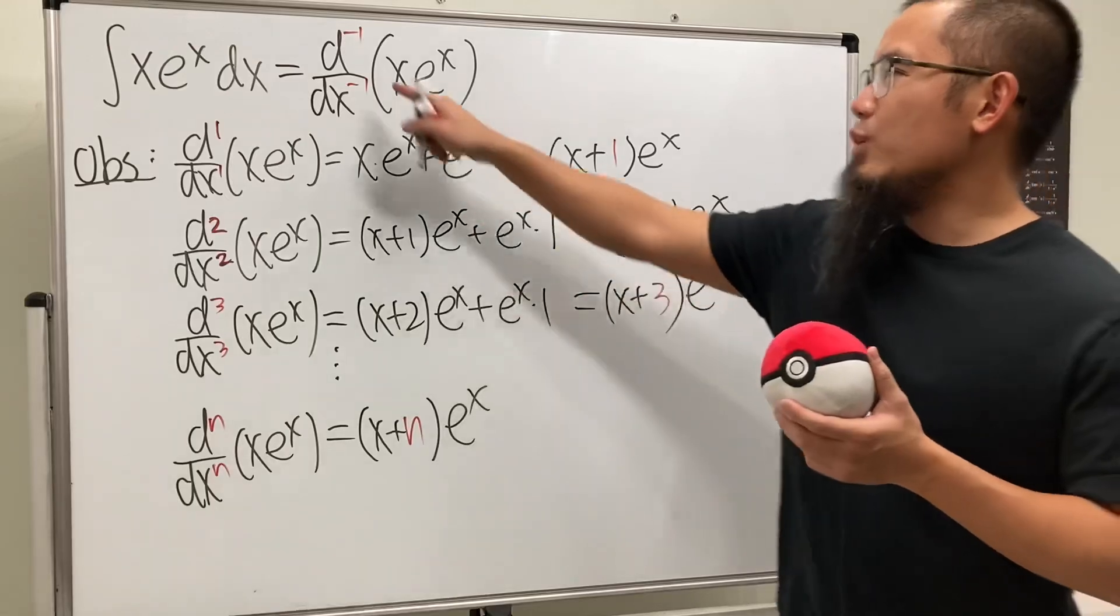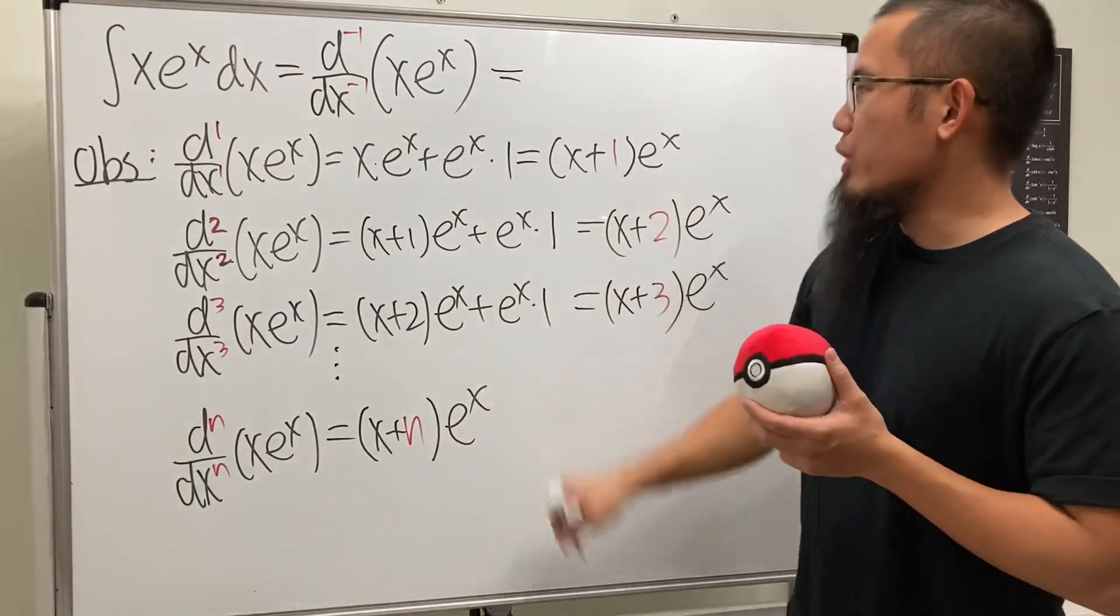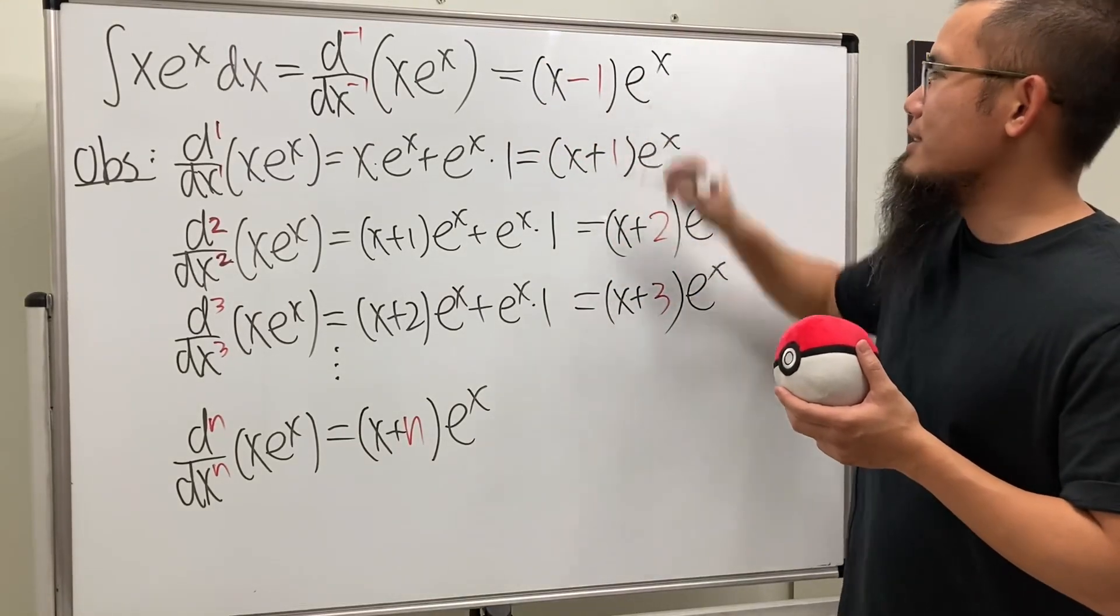And as you can see, right here, we have n is equal to negative 1. So, if you put negative 1 right here, we'll just get x-1, and then times e^x.